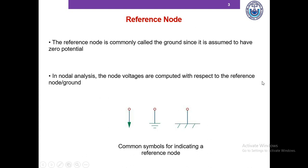To understand nodal analysis, we need to understand another concept as well — it's called the reference node. The reference node is commonly known as the ground since it is assumed to have zero potential. In nodal analysis, the node voltages are computed with respect to a reference point or ground, and we assume the voltage of that reference node is zero. All nodal voltages are measured with respect to that reference node. These are the common symbols of a reference node or ground.